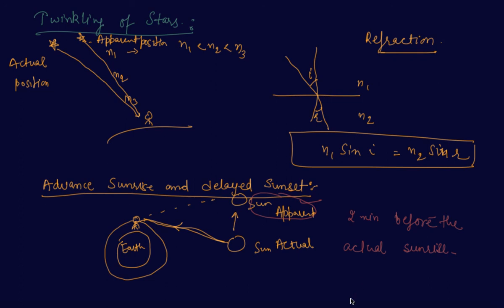I hope you are clear about the twinkling of stars and advanced sunrise and delayed sunset. Similarly, in the case of sunset, the sun appears to set about two minutes after it has actually set, also because of the refractive index of the atmosphere. So now you are clear about atmospheric refraction and the two phenomena based on it: twinkling of stars and advanced sunrise and delayed sunset. If you have any questions, please comment in the comment section. I will be happy to help. Thank you, happy learning.